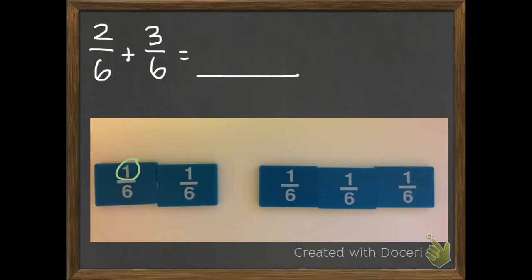So we have one, two, three, four, five. So we have a total of five, and these are sixths. So we have five sixths.